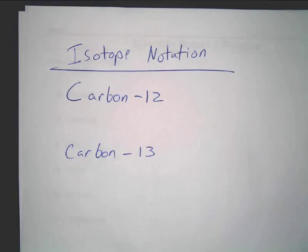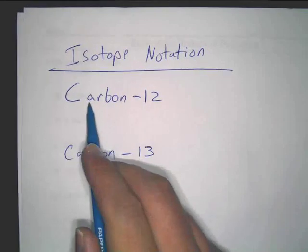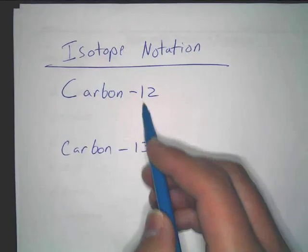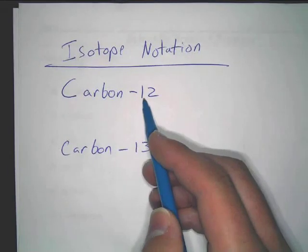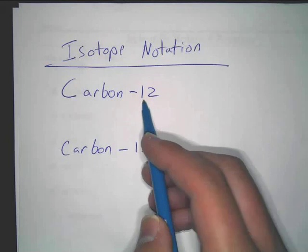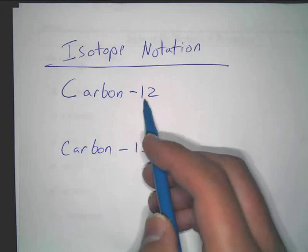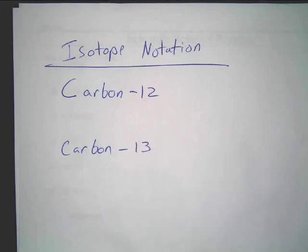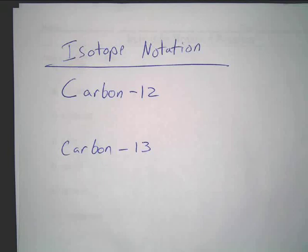Carbon 12 — here's what this means. This is telling you that you have carbon, and you have an isotope of carbon with a mass number of 12. So the first thing I want you to do: go onto your periodic table and figure out what the atomic number of carbon is. Just figure it out, look at it, find it.